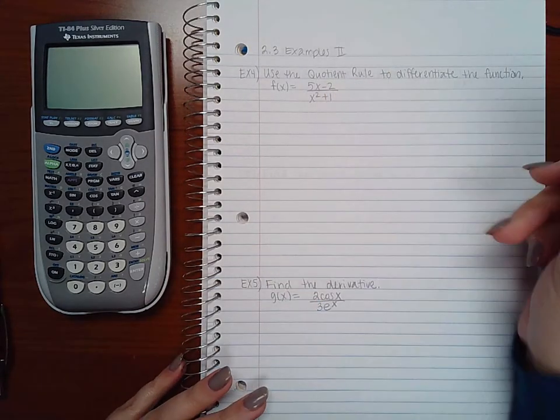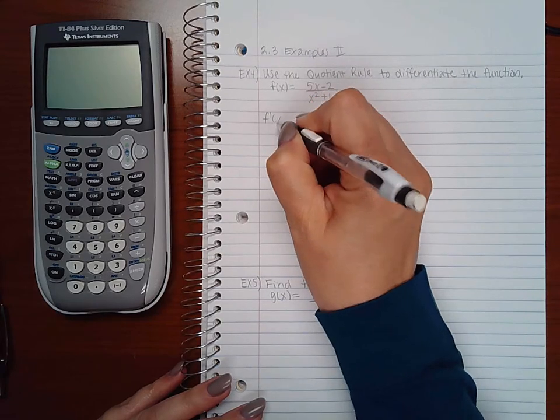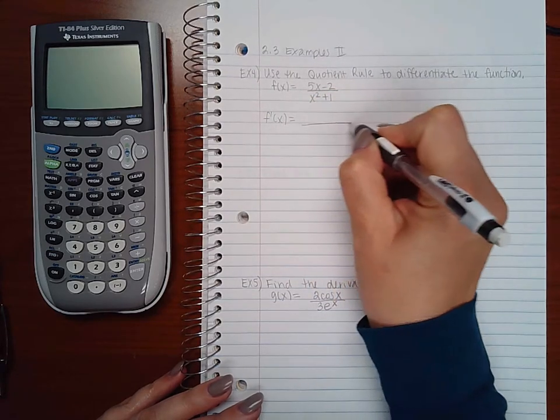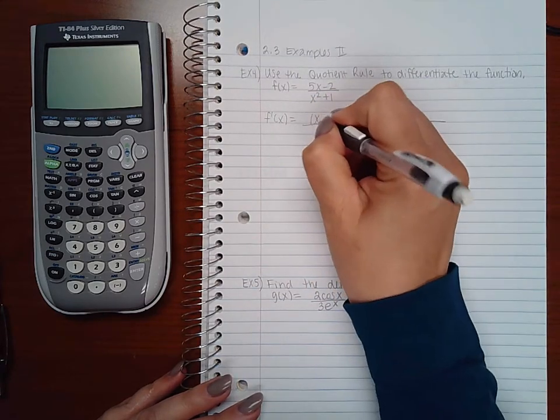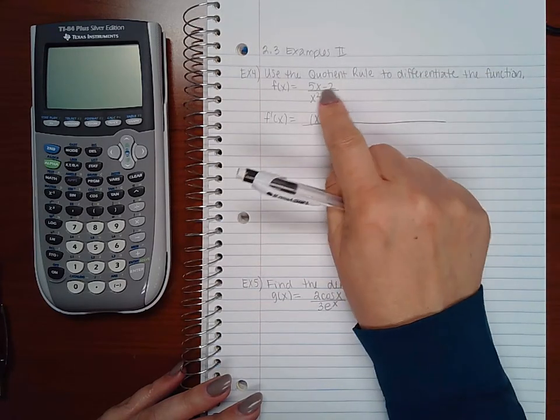So again, I have a fraction, so we've got to do the quotient rule. Which means I'm going to take low, x squared plus 1, d high, derivative of the numerator.